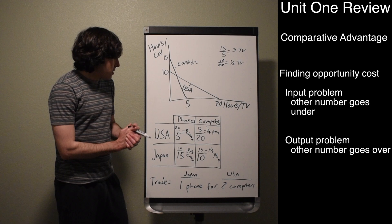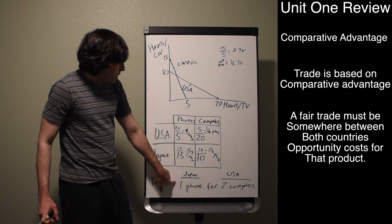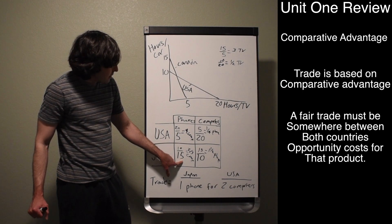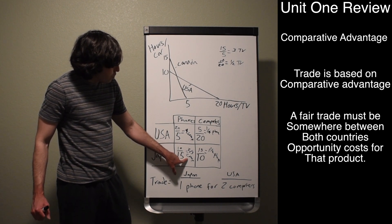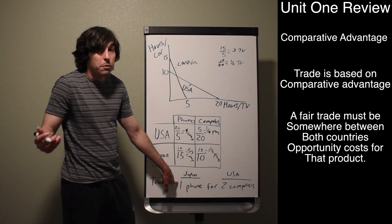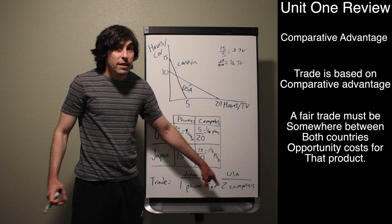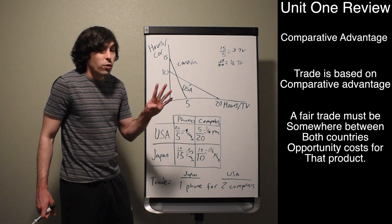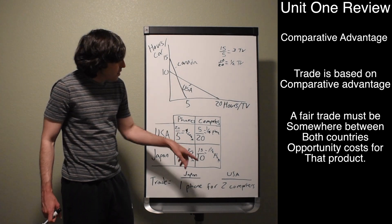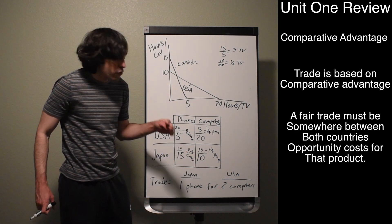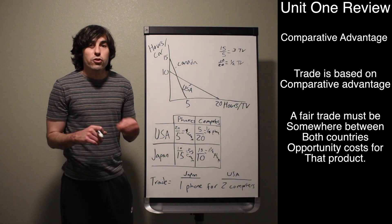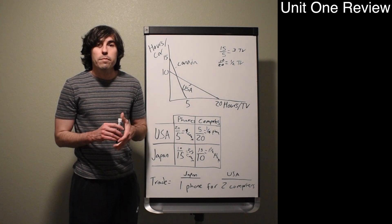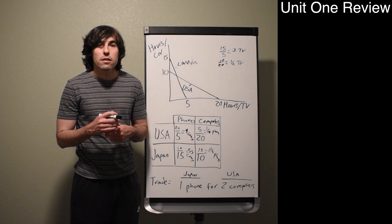Now let's check whether trade makes sense. Would Japan agree to trade one phone for two computers? Domestically, Japan gives up only two-thirds of a computer for one phone, so getting two computers internationally is a great deal. Would the US agree? Domestically, to get one phone the US gives up four computers, so trading only two computers for one phone internationally is much better. Both countries benefit from trade — and that was unit one. Join me next time when we cover the next units.